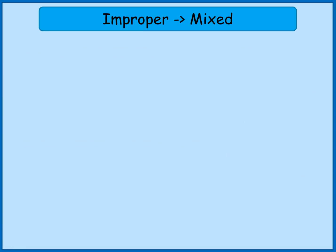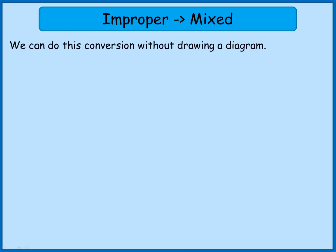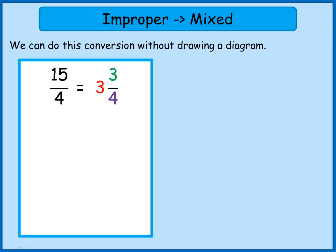It's okay to do these by drawing diagrams, but after a while you might think: is there a shorter way of doing it? There is. Let's look at those two examples to work out a quicker way. So 15 quarters is the same as saying 15 divided by 4 — my top number 15 divided by my bottom number 4.